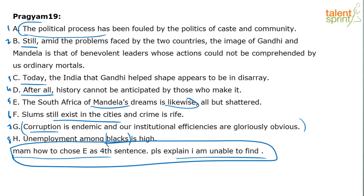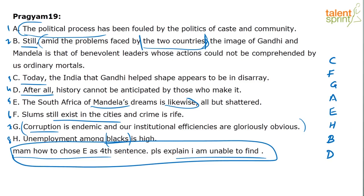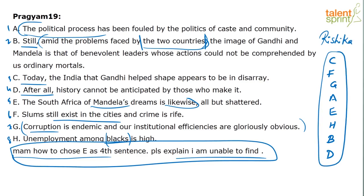See, Anuba, it can't be B because it says 'amid the problems faced by the two countries' — what two countries? There has to be a sentence that is talking about these two countries first. Okay, Rishika has suggested C, F, G, A, E, H, B, D. Yes, that's correct. Let's take Rishika's sequence. See — 'Today, the India that Gandhi helped shape' — why is the definite article 'the' here? Because it is specifying what Mahatma Gandhi helped shape, the India that he shaped. So the definite article is absolutely fine.